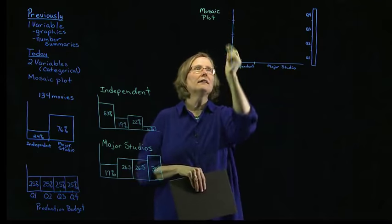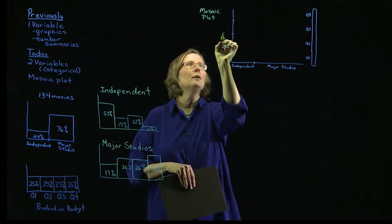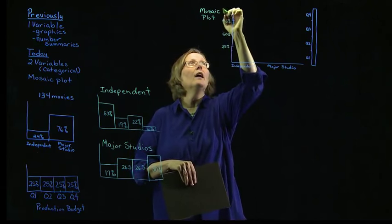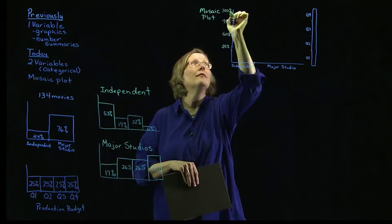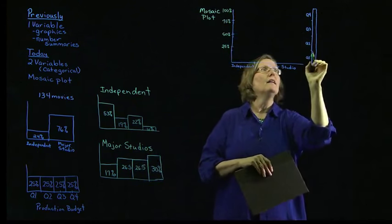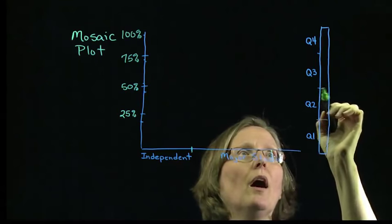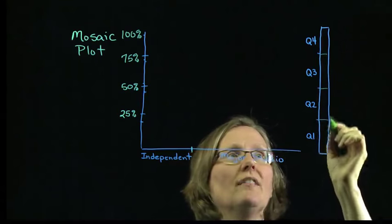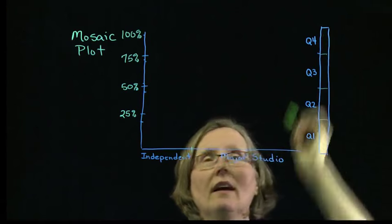On my y-axis, I'm going to mark off 25%, 50%, 75%, and 100%. Along the right side of my plot, I'm going to put a narrow bar that marks off the quartiles at 25, 50, 75, and 100%.